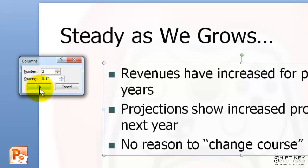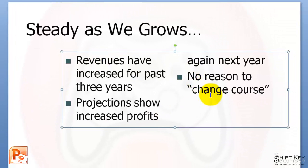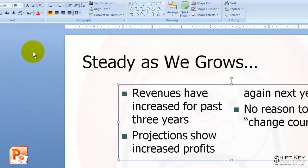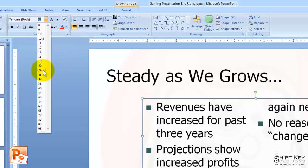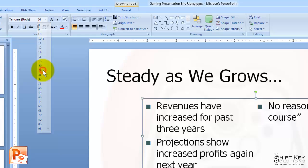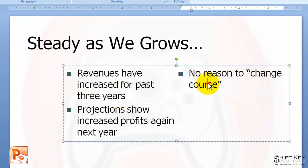From there, I'm going to click OK, and that creates two columns for me. Now in addition to formatting this, I want to change the font size. So I'm going to come to my Font group and change the font size from 28 to 24. And that spaces it out a little bit and makes for two nice columns.